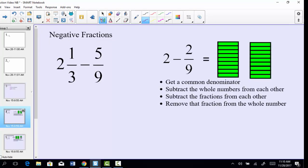So if we want to take a look at negative fractions, we want to subtract 2 and 1/3 minus 5/9. Well, we know the first thing we have to do is get a common denominator. So in this case our common denominator is going to be 9.